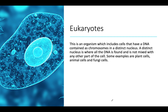Let's start by looking at eukaryotes. A eukaryote is an organism which includes cells that have DNA contained as chromosomes in a distinct nucleus. The key difference between eukaryotes and prokaryotes is that the DNA is held as chromosomes in a distinct nucleus — the DNA is held inside the nucleus, not mixed with any other part of the cell. Some examples are plant cells, animal cells, and fungi cells.